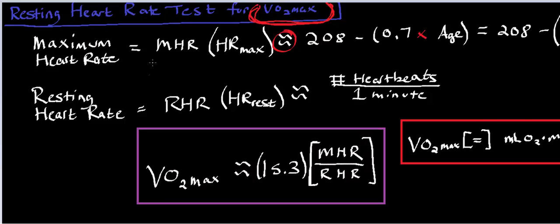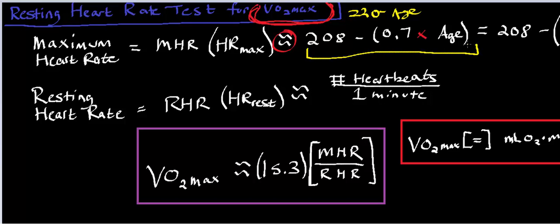First, we want to estimate the maximum heart rate. There's a simpler way some places use — and it may be beneficial on an exam for the sake of time — you take 220 and subtract the person's age. There's also a more complicated formula that is therefore a little more accurate in fitting collected data. That formula is: you take 208 and subtract the product of 0.7 times the person's age.